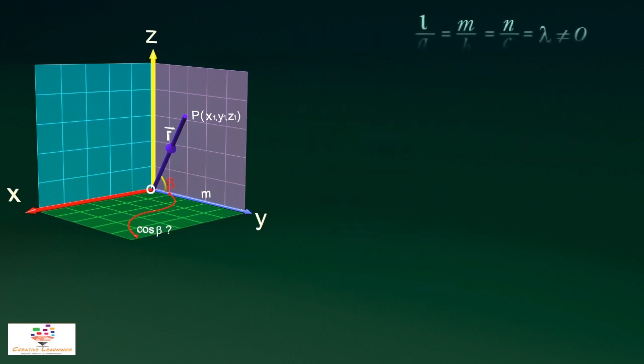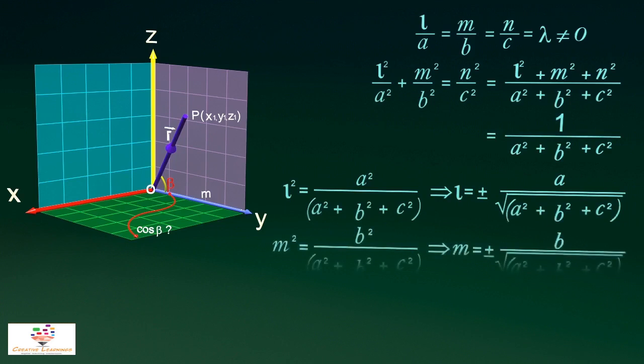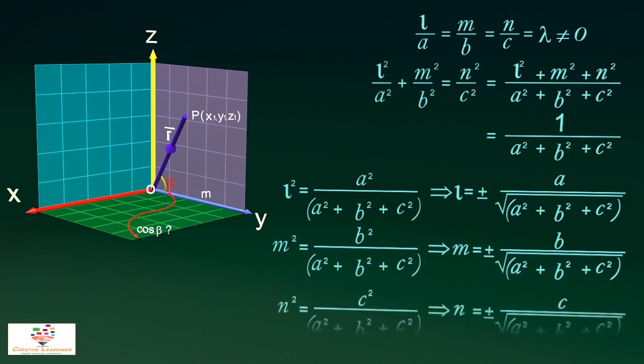And if there exists ABC such that, then ABC are known as direction ratios, and L, M, N are corresponding direction cosines. And one can also find the relation between direction cosines and direction ratios through some simple derivation.